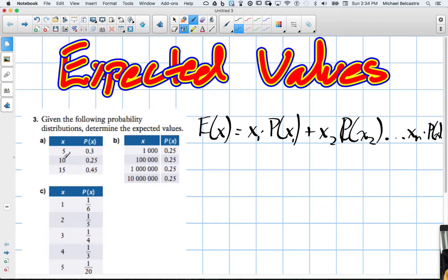So in our case here, let's go through A. The expected value of X is 5, that's our value there, times our probability, which is 30%, so 0.3, plus our value of X2 is 10 times 25%, or 0.25, plus 15 times 45%, or 0.45.